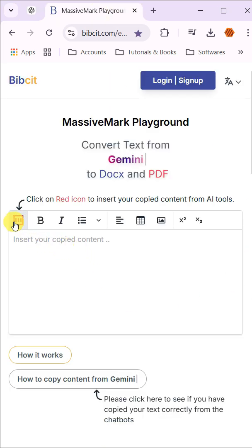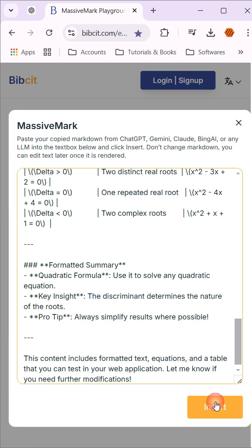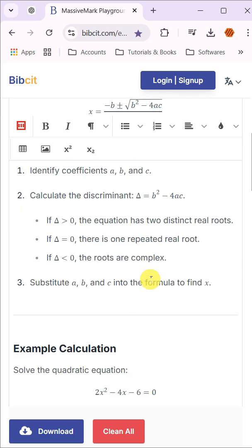After copying, go back to the Massive Mark Playground interface and paste the content by clicking the red Paste icon. Once pasted, you'll notice that all formatting, equations, and tables appear exactly as they were in ChatGPT.